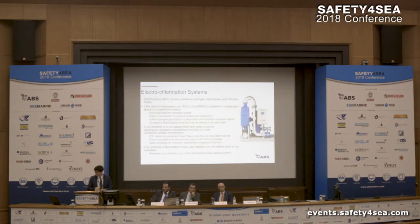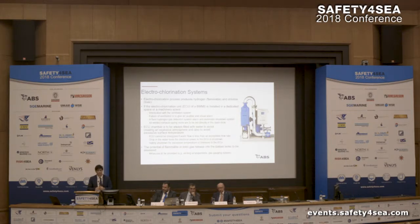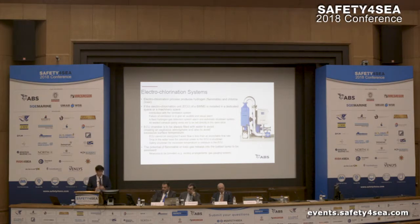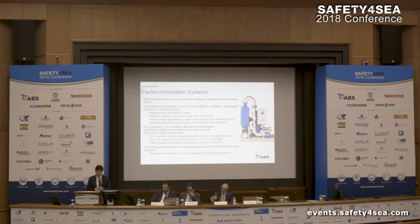For electrochlorination systems, this technology uses direct current into the ballast flow, and by this method we have the development of the active substances, but also hydrogen generation as a by-product. Our requirements relate mainly to how we are going to deal with this hydrogen issue. We have some arrangements including ventilation systems, audible and visual alarms, fixed hydrogen gas detection systems, and also safeguards to make sure that the ECU unit will not run dry, because in the past we had some incidents with this type of technology.